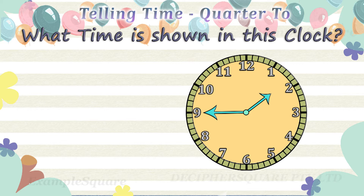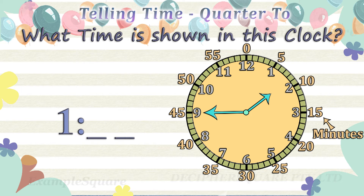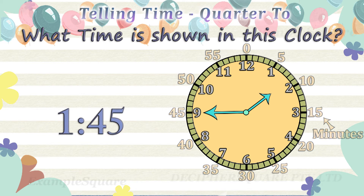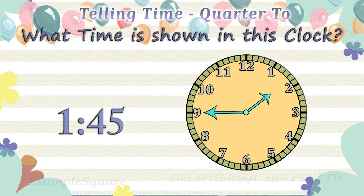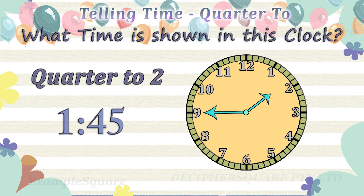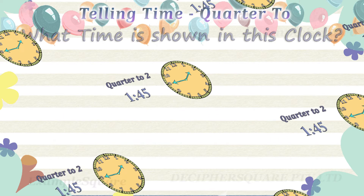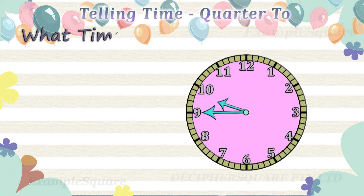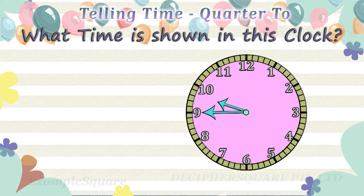What time is shown in this clock? The hour hand is pointing in between 1 and 2, so the time is 1 hour and some minutes. The minute hand is pointing at 9, referring to 45 minutes. The time is 1:45. It is 15 minutes to 2. 15 minutes is quarter of an hour, so the time is quarter to 2.